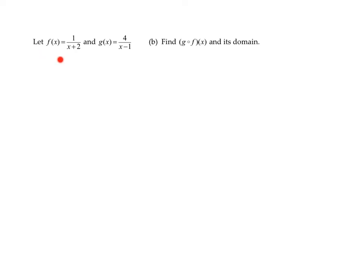In this problem, I know f of x is a rational function, 1 over x plus 2, and g of x is another rational function, 4 over x minus 1.